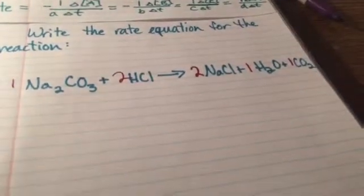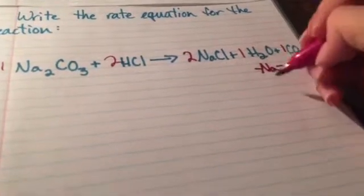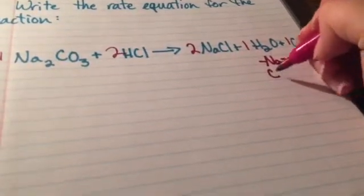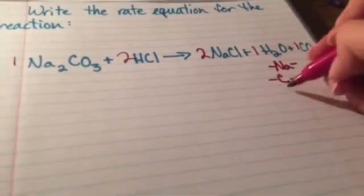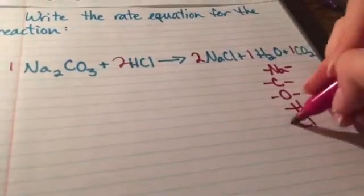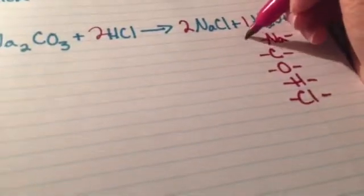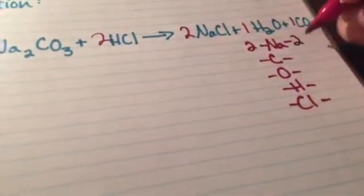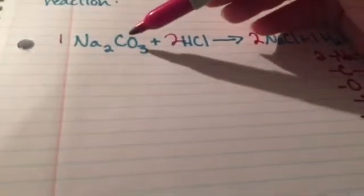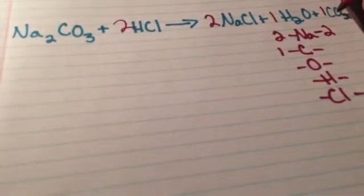You can always check what you're balancing by writing out everything that you have. So on this side we have two sodium, and on this side we have two sodium. On this side we have one carbon, on this side we have one carbon.